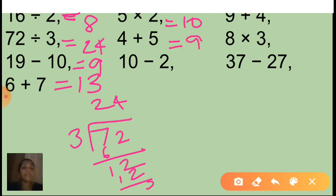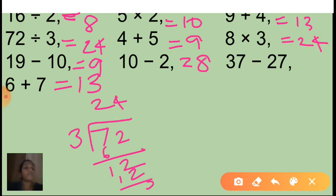And 10 minus 2 — the answer is 8. And 9 plus 4 — very good, 13. 8 threes are 24. And the next one is 37 minus 27 — that is 10. So this is the value of these expressions.